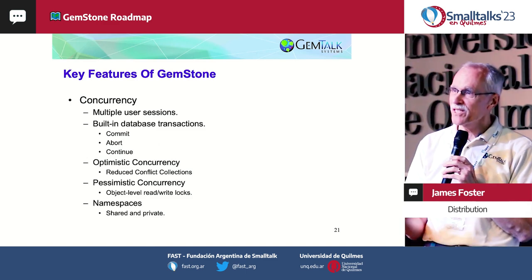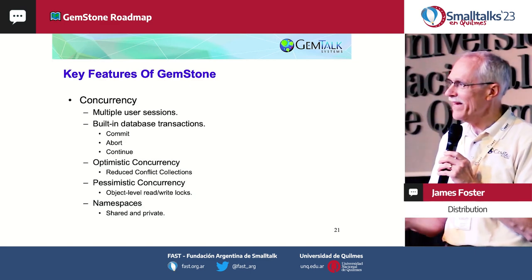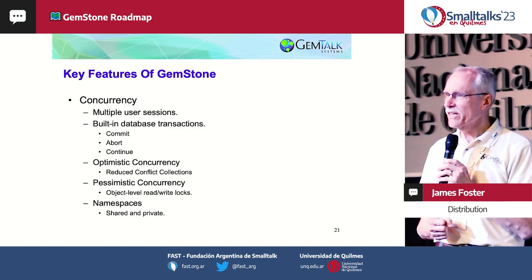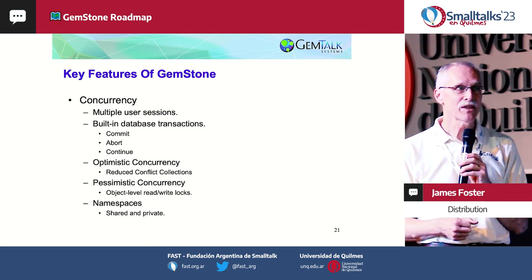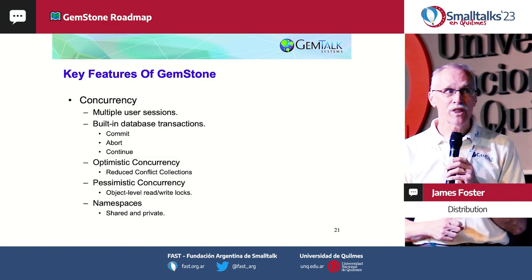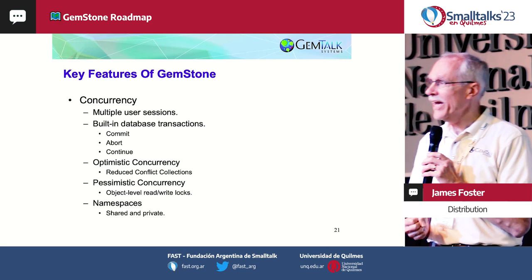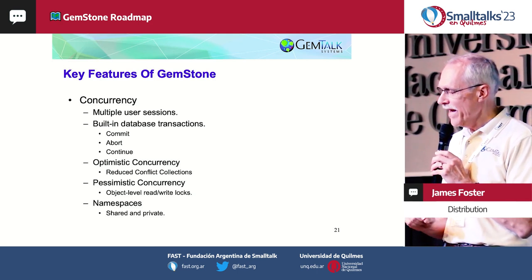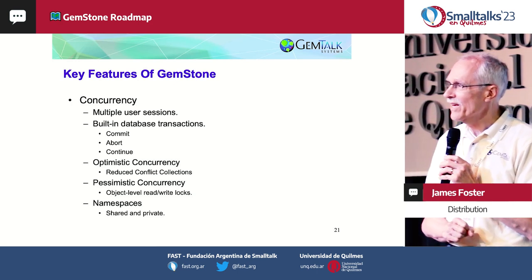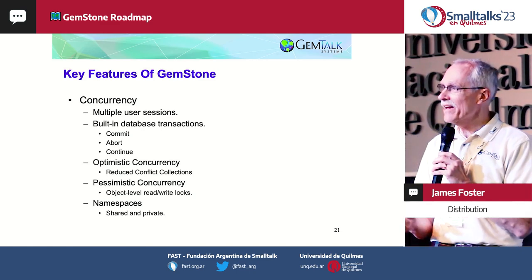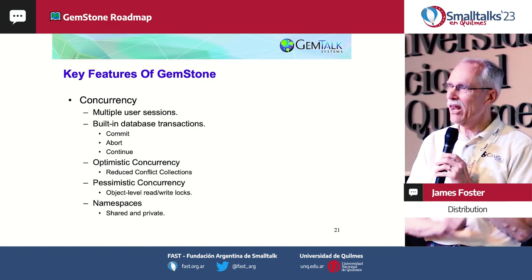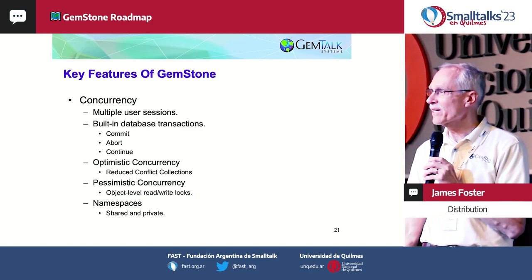Concurrency is one of the areas studied in computer science — how do you manage concurrency. GemStone has multiple user sessions, built-in transactions with commit and abort. We support both optimistic concurrency and pessimistic concurrency. With optimistic concurrency, you just go ahead and do what you want to do and we'll attempt to commit; if there's been a conflict, the commit will fail. The alternative is object-level read and write locks, where you can guarantee that if you acquire the lock, changes to that object will not prevent you from committing.